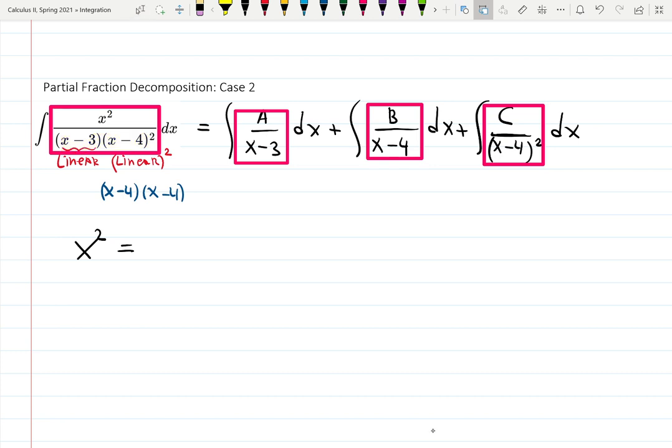This equals to A times x minus 4 squared plus B times x minus 3 times x minus 4 plus C times x minus 3. Did you see what just happened? I did multiply by x minus 3 and that x minus 3 canceled out. I just don't want to keep writing it. That's how I want to teach you how to speed up the process.